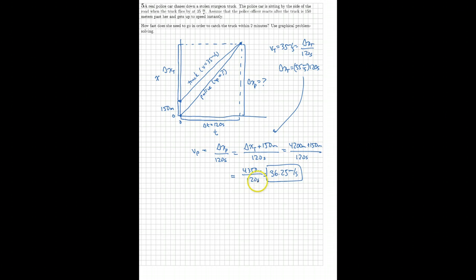So my units worked out - meters divided by seconds is meters per second - but does the number make sense? Well, it's in the same ballpark as the truck, and that's good. But it's a little bit faster, and it would need to be, because the police car needs to travel further in the same amount of time. But really, it ends up not being all that much faster.